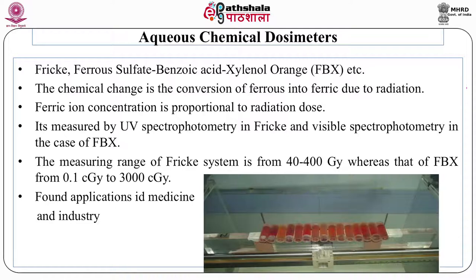Another class is aqueous chemical dosimeters. In these, ferrous sulfate, benzoic acid, and xylenol orange are some of the dosimeter components. Ferrous ions are converted into ferric ions by radiation, and the ferric ion concentration is proportional to radiation dose. These ferric ion concentrations can be measured by UV spectrophotometry in the Fricke dosimeter and visible spectrophotometry in the FBX case. The measuring range of Fricke is 40 to 400 gray, whereas FBX ranges from 0.1 centigray to 3000 centigray. The FBX dosimeter was developed in India as a modification of the Fricke dosimeter and has found many applications in medicine and industry.